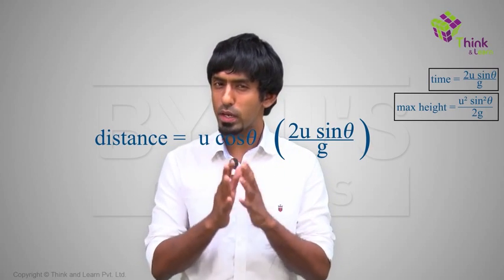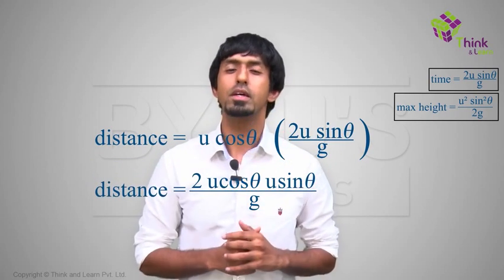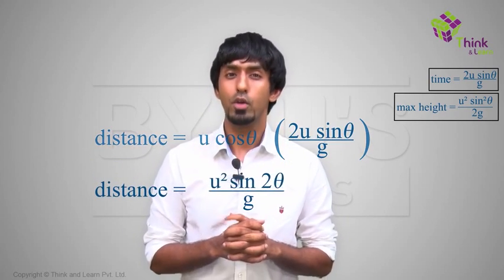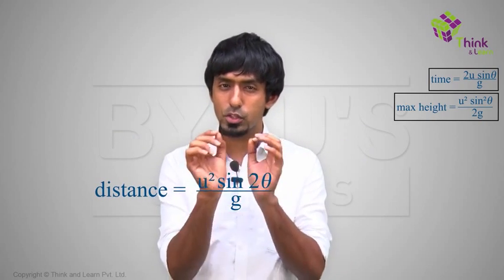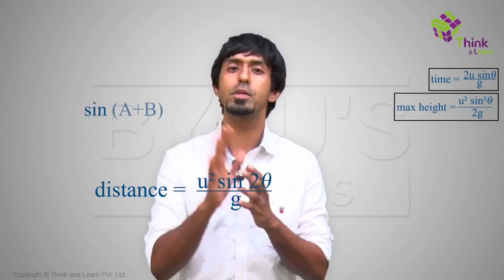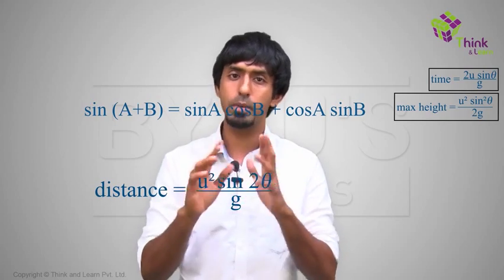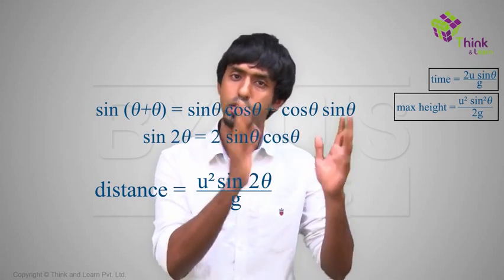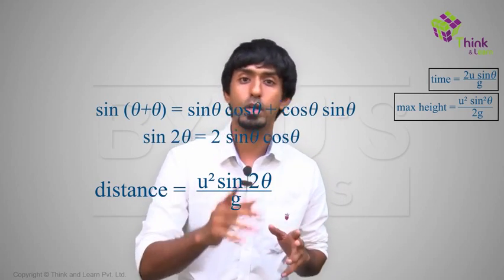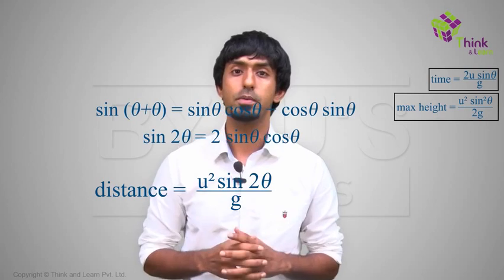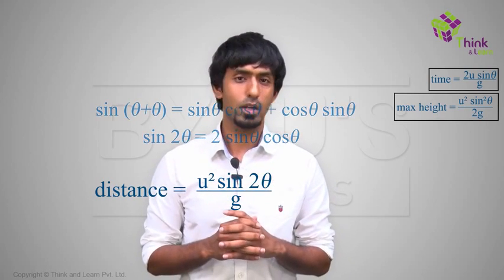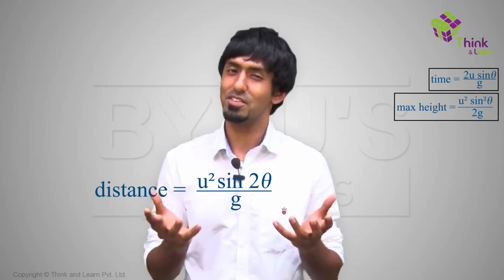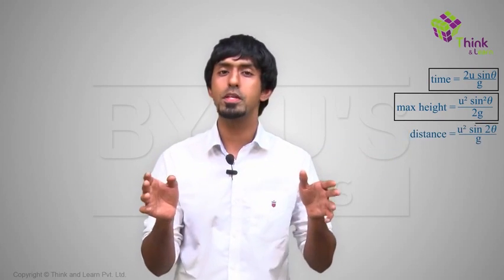What you get is u cosθ multiplied by 2u sinθ/g. Now, 2 sinθ cosθ equals sin2θ — from the trigonometric identity: sin(a+b) = sinA cosB + cosA sinB. Put a = b = θ and you get sin2θ = 2 sinθ cosθ. So in the final form, the range — where to place the net — is u²sin2θ/g.